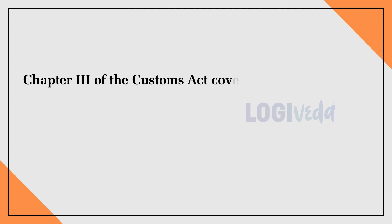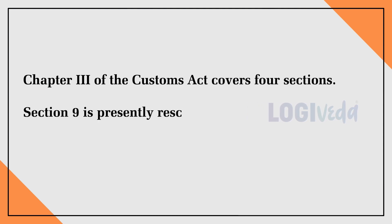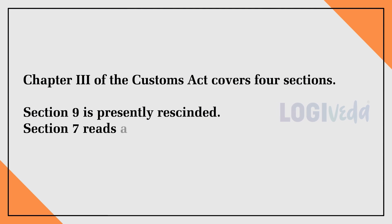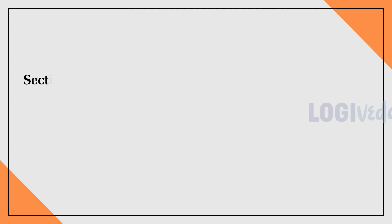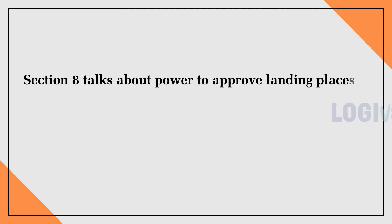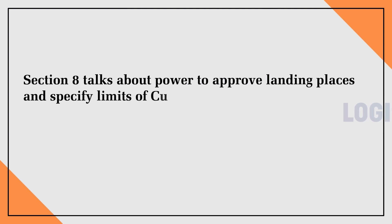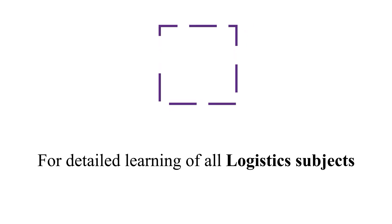So Chapter 3 of the Customs Act covers four sections. Section 9 is presently rescinded. Section 7 reads as appointment of custom ports, airports, etc. Section 8 talks about power to approve landing places and specify limits of custom area. Section 10 talks about appointment of boarding stations. For detailed learning of all logistics subjects, visit www.logiveda.com.